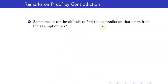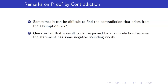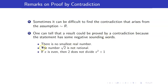Sometimes it can be difficult to find the contradiction that arises from the assumption not-R. It takes practice and creativity. One can tell a result could be proved by contradiction because the statement has some negative-sounding words — for instance: there is no smallest real number; √2 is not rational; if x is even, then 2 does not divide x² + 1. These are hints to proceed by contradiction, since it is usually easier to work with positive conditions rather than negative ones. The negative conditions become positive after negating the statement.